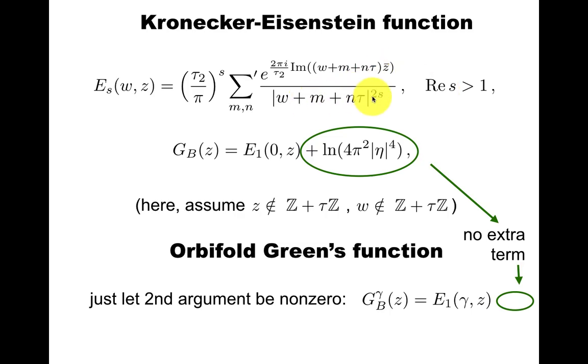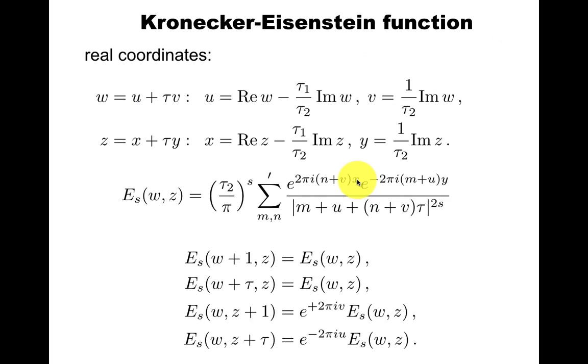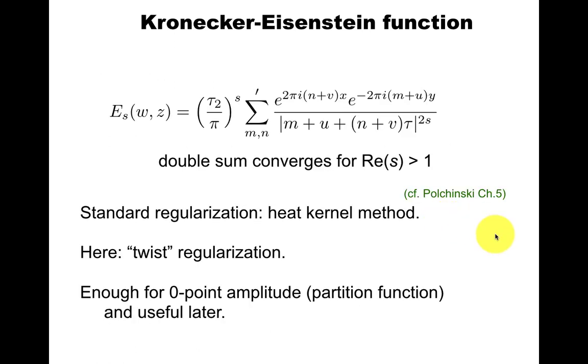So now we introduce an object that's closely related to theta functions, which is the Kronecker-Eisenstein function, also known as the Kronecker-Eisenstein series. This conditional convergence at s equals 1, this phase looks unfamiliar to some people, so let me also write it in real variables. Introduce w is u plus tau v, so this object is quasi-periodic in z, which you can think of as the puncture on the torus.